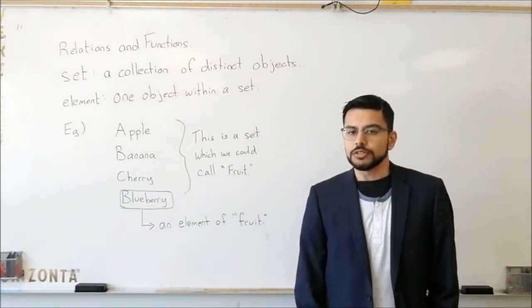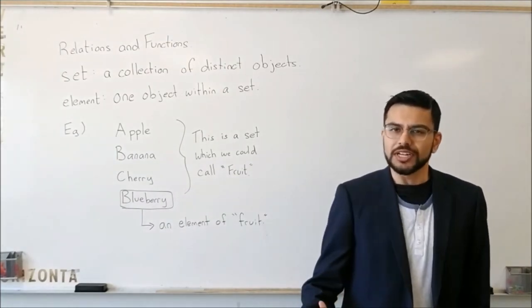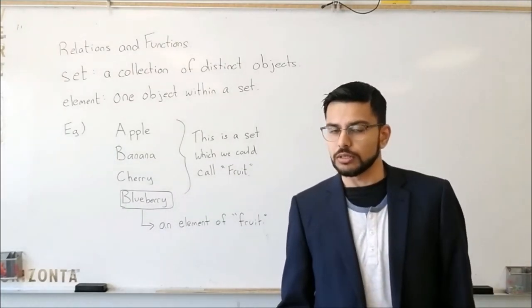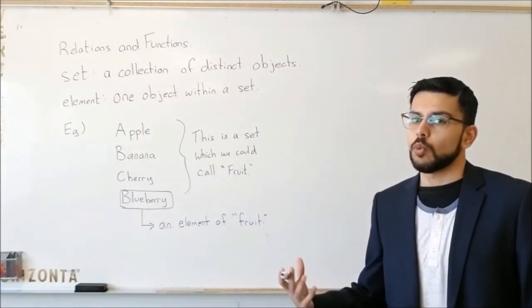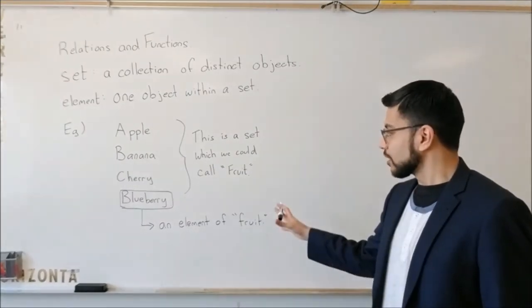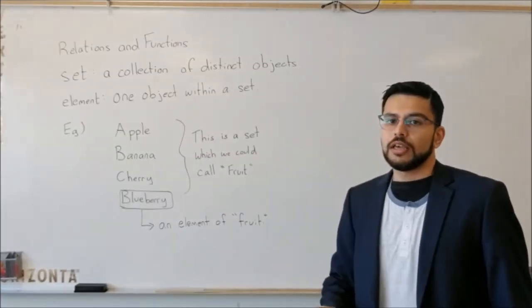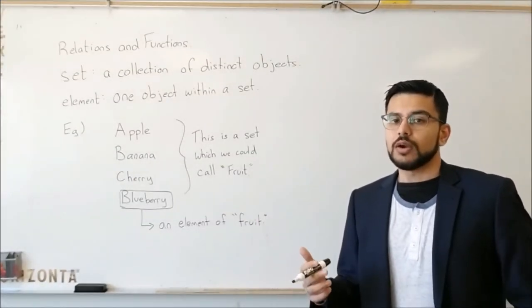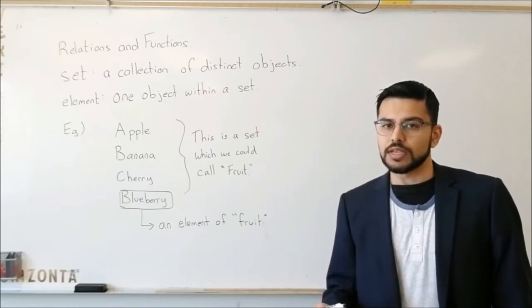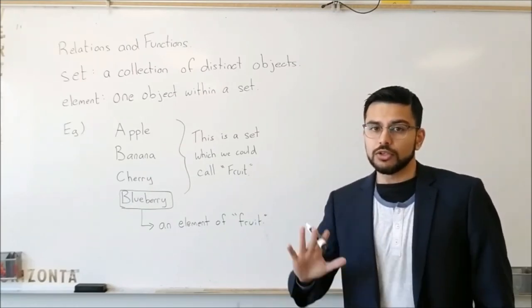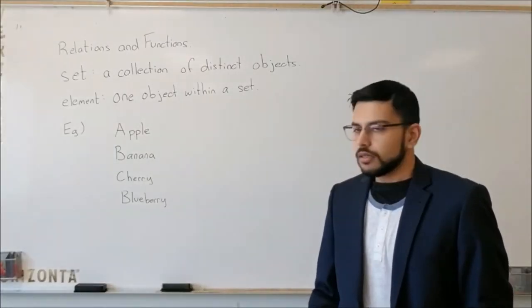Now the reason for these words is so that now we can actually define something called a relation. And a relation is when we're able to connect the elements from one set. So now we know what elements are, we know what a set is. If we have two of these lists, so two sets, and we are able to connect the elements between those two sets, that would be an example of a relation.